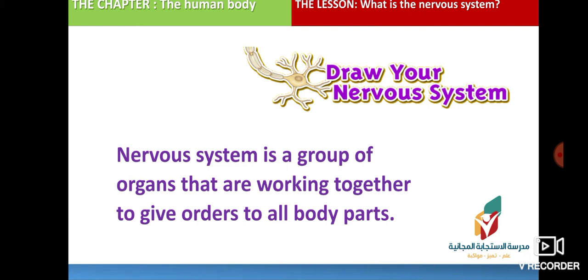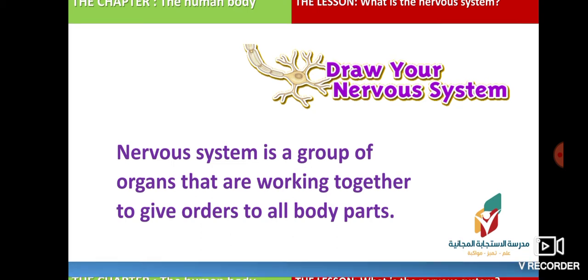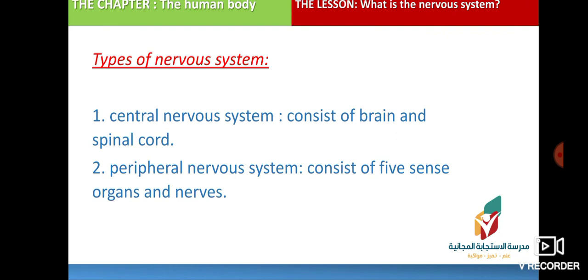The nervous system is a group of organs that work together to give orders to all body parts. The nervous system is like a management room — this management room sends orders to all of its workers, and these workers carry out the orders sent by the nervous system.